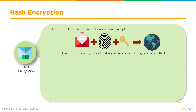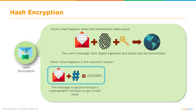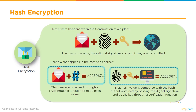Once a digital signature has been generated, the message, the digital signature, and the public key — these three things are transmitted on the public blockchain. At the receiver end, the message is passed again through the cryptographic function on the reverse side to get a hash value. That hash value is compared with the hash output obtained by passing the digital signature and the public key through a verification function. The hash output of both functions should match, and that's how the authenticity of the message is validated.